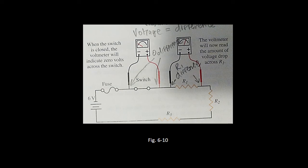In summary, a series circuit provides only one path for current flow. Current is equal throughout the circuit: IT = I1 = I2 = I3 and so on. The total resistance in a series circuit is equal to the sum of all resistance values: RT = R1 + R2 + R3 and so on. The source voltage is equal to the sum of the voltage drops: ET = E1 + E2 + E3 and so on. The total power consumed is equal to the sum of individual power consumption: PT = P1 + P2 + P3 and so on.